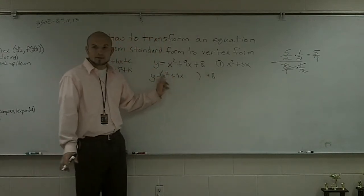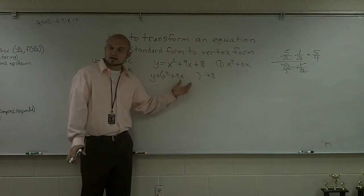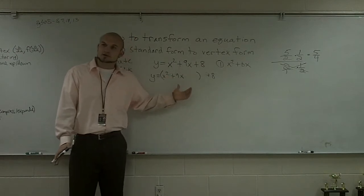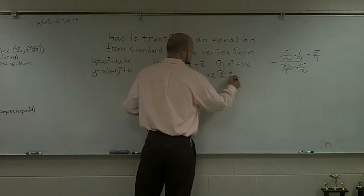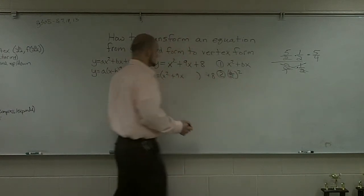Now I have my form x² plus bx, and now what I'm going to do is want to complete the square. So the second step I need to do is find out what my b over 2 squared is going to be.